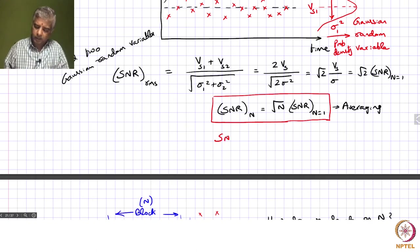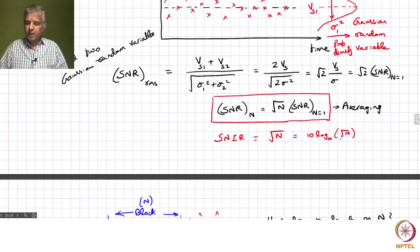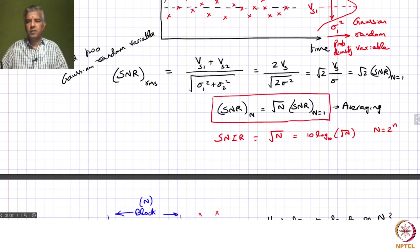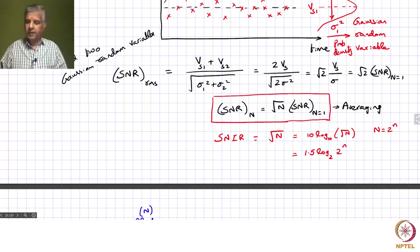If we write the signal-to-noise improvement ratio, that corresponds to √N in linear units. In log scale that is 10 * log_base10(√N). It is convenient to express N as 2^n, so we can represent this as 1.5 * log_base2(2^n), which equals 1.5n dB. This gives a round number for the SNIR.